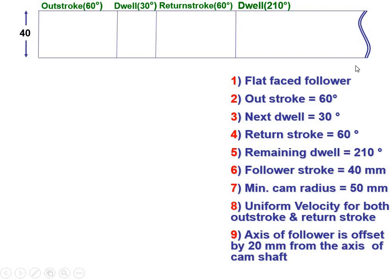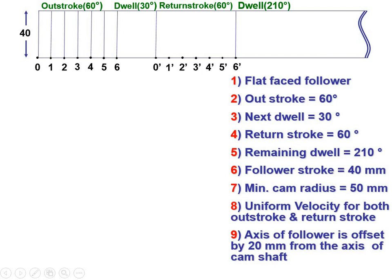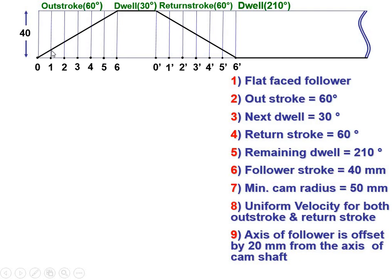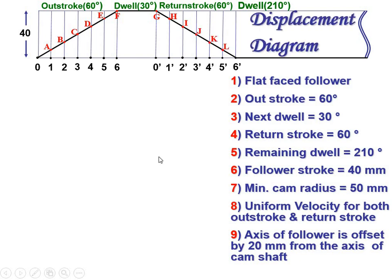Divide the out-stroke into 6 equal divisions and label them 0, 1, 2, 3, 4, 5, 6. Draw vertical lines through all these points. Similarly, divide the return stroke into 6 equal divisions and label them 0', 1', 2', 3', 4', 5', 6', drawing vertical lines through all these points. For uniform velocity in both ascent and descent, draw a straight inclined line going upward for the out-stroke, a horizontal line for the dwell, a straight inclined line for the return stroke, and a horizontal line for the remaining dwell. Label intersections as A, B, C, D, E, F for the out-stroke and G, H, I, J, K, L for the return stroke. This completes the displacement diagram.